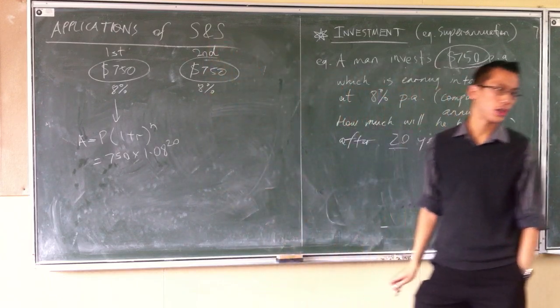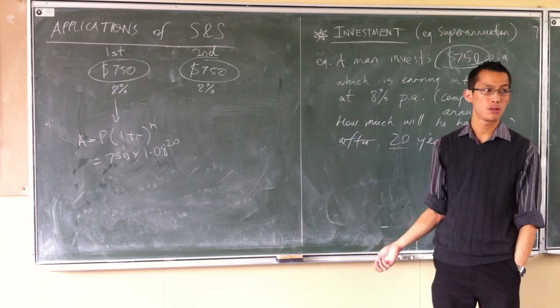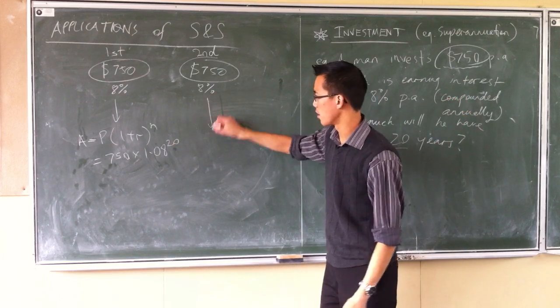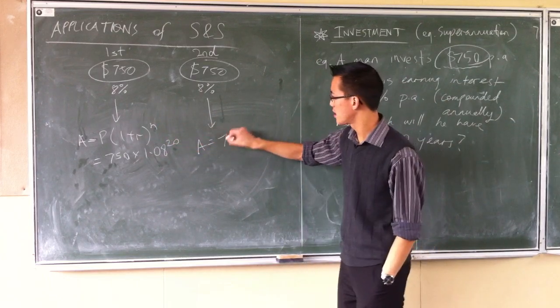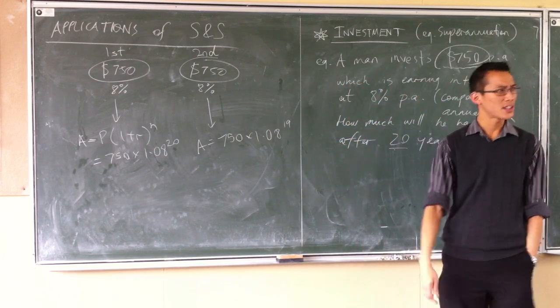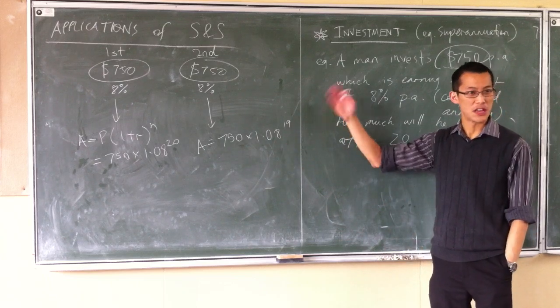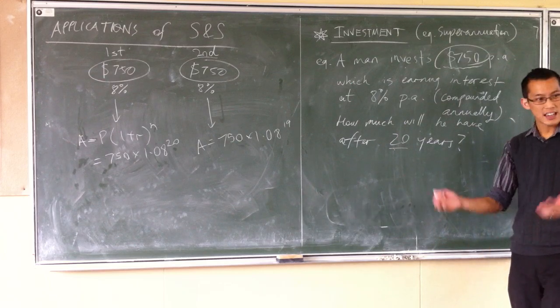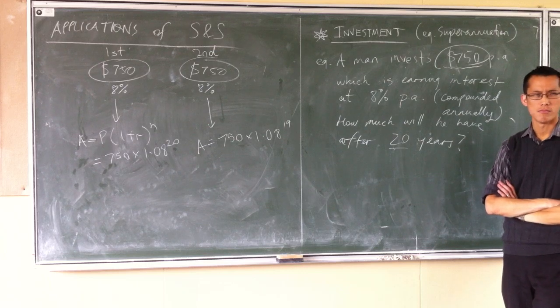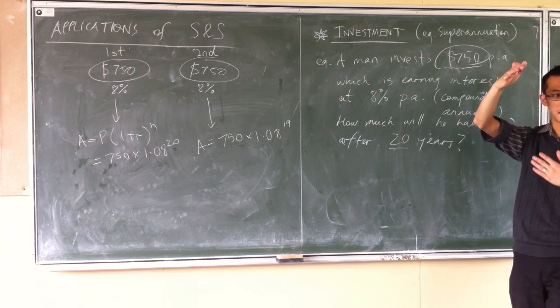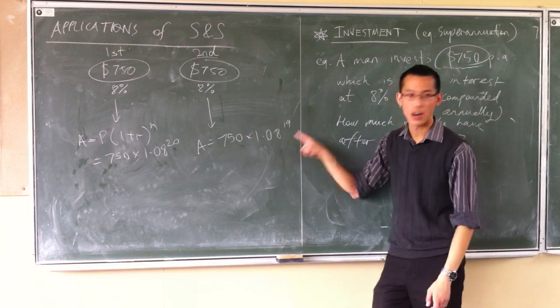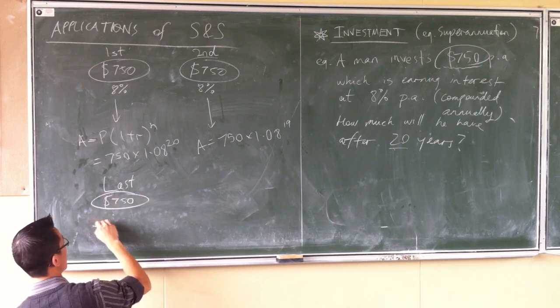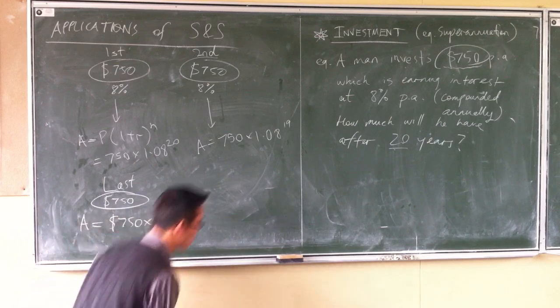What about the second lot? Next year he puts in another $750. Well, when you compare it to the first lot, because you put it in one year later, instead of getting 20 lots of interest added onto it, you only get 19. Skipping the formula, because I can see the pattern that's happening, this is going to be $750 by your interest to the power of 19. You start to establish a pattern here. The next one's going to be 18 and 17. What will the last one be? At the beginning of the 20th year he sticks in his $750. At the end of the 20th year, it's been in there a whole year, so I guess it's going to get just one lot of the interest. So the last $750 is just to the power of 1.